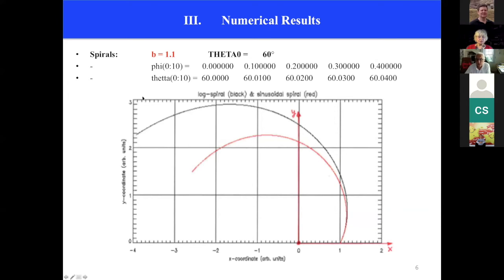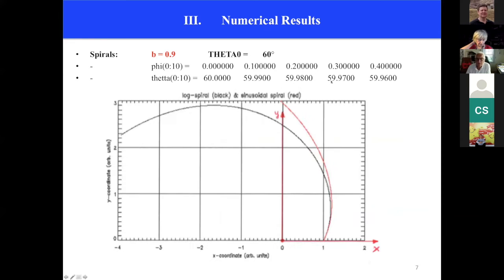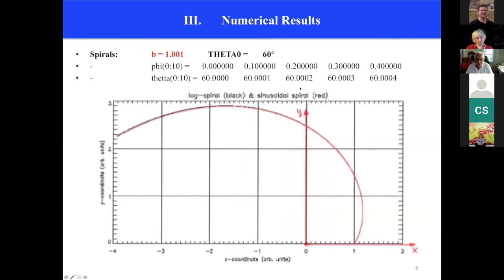The black curve is a logarithmic spiral and the red curve is the sinusoidal spiral. Listed above is the polar angle phi, or several values of it, and the Bragg angle theta. You see that the Bragg angle varies with the polar angle phi. If you choose B equals 0.9, you obtain this figure. Again, you see a variation of the Bragg angle theta. And finally, if you choose B extremely close to one, you approximate the logarithmic spiral, where the Bragg angle does not vary anymore.